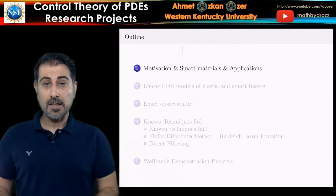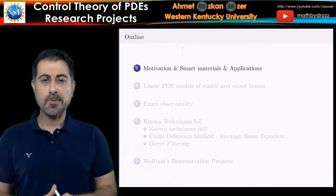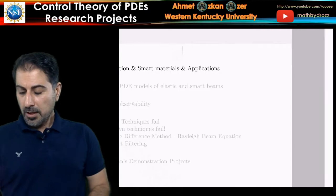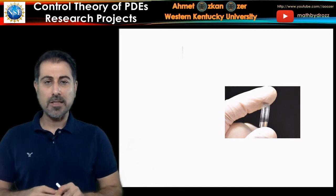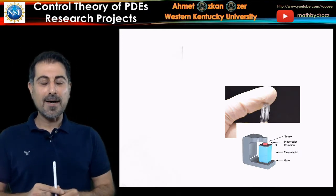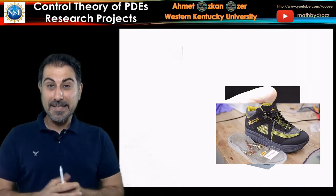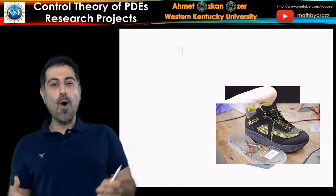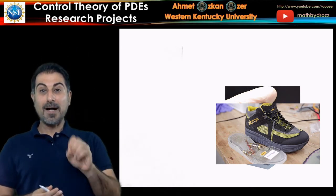Here's the outline of my talk. I'm going to start with motivation and smart materials and applications — we have plenty of applications. I'm going to talk about piezoelectric and piezoelectromagnetic materials. The first example is a very tiny flexible transistor made of piezoelectric materials. The second is a biodegradable pressure sensor with piezoelectric components. We also have a shoe design that uses a piezoelectric layer in the sole — when you walk, you generate energy, because piezoelectric materials produce energy when mechanical forces are applied.